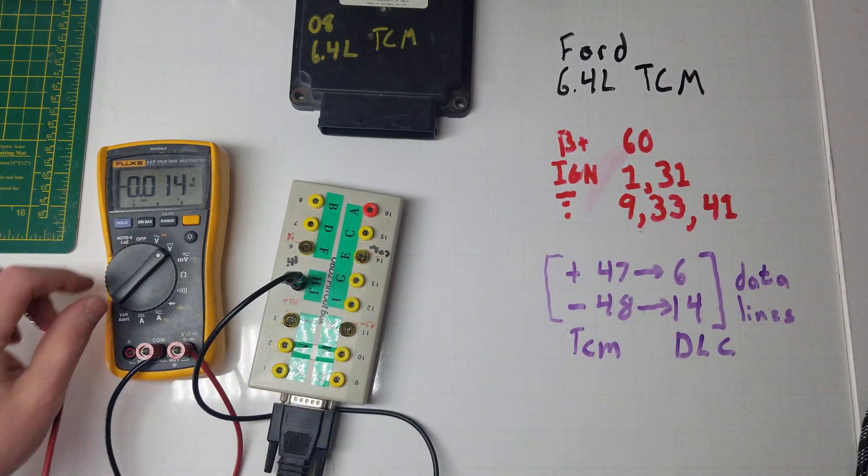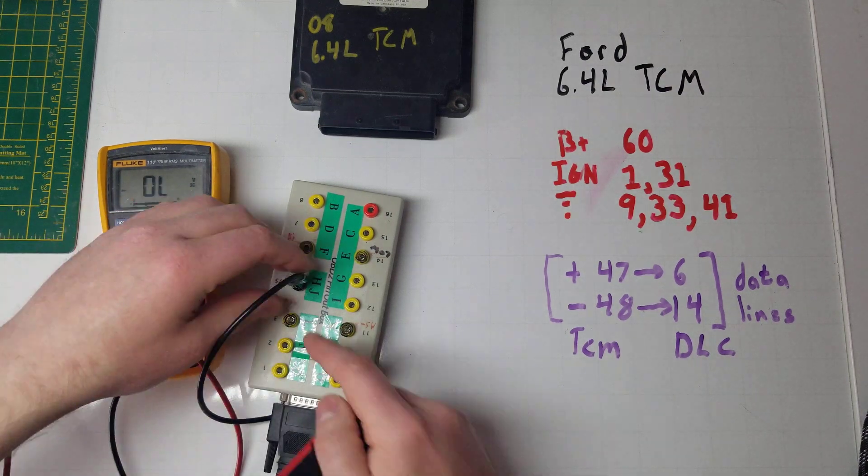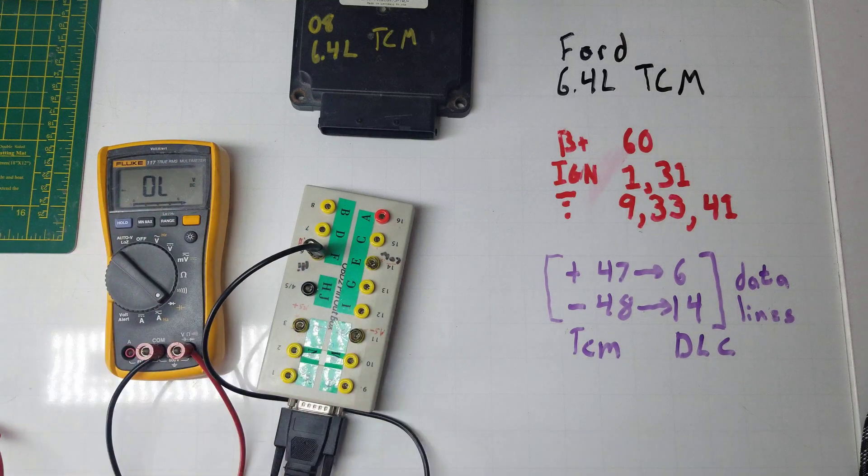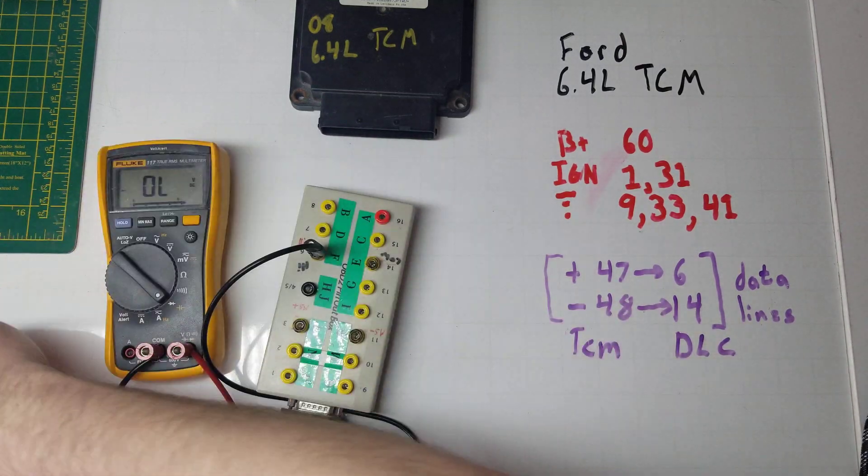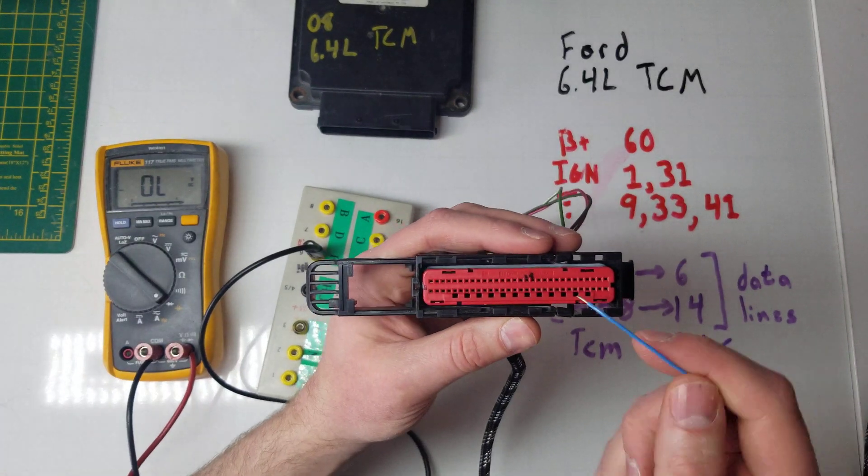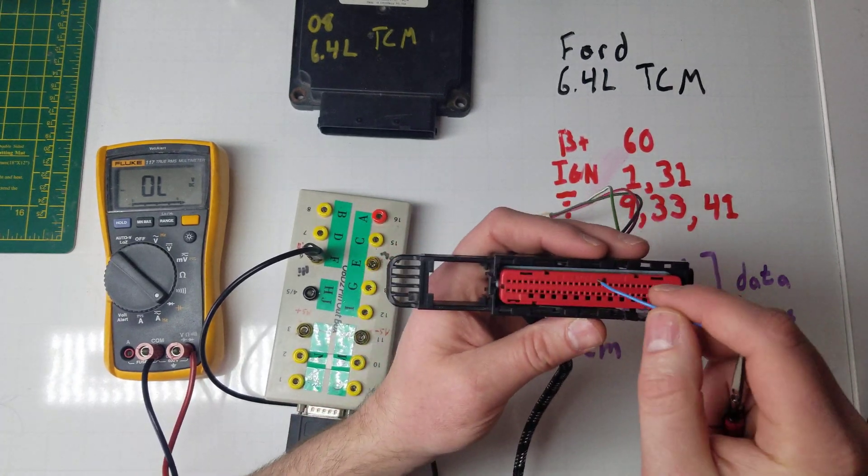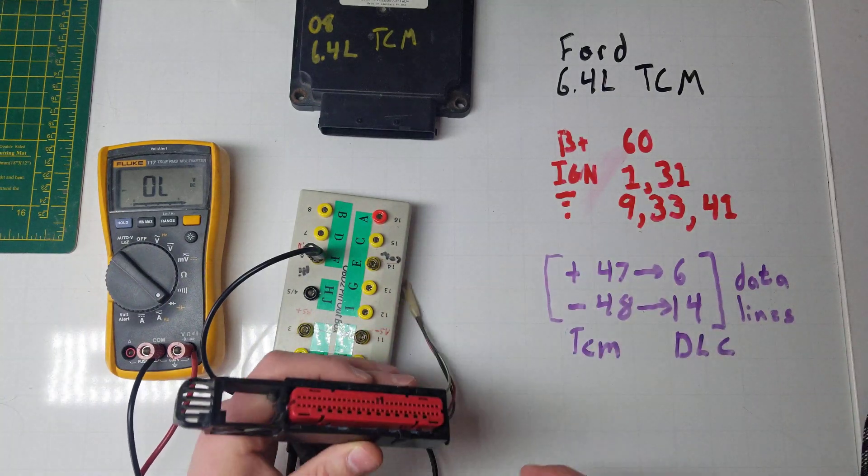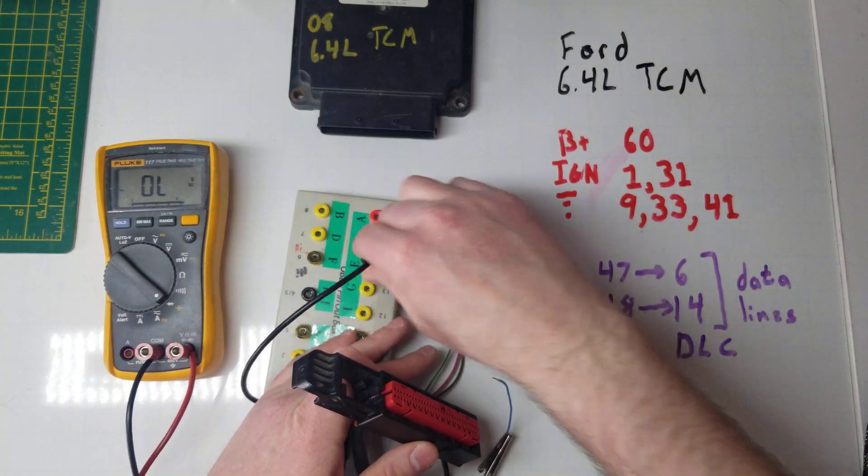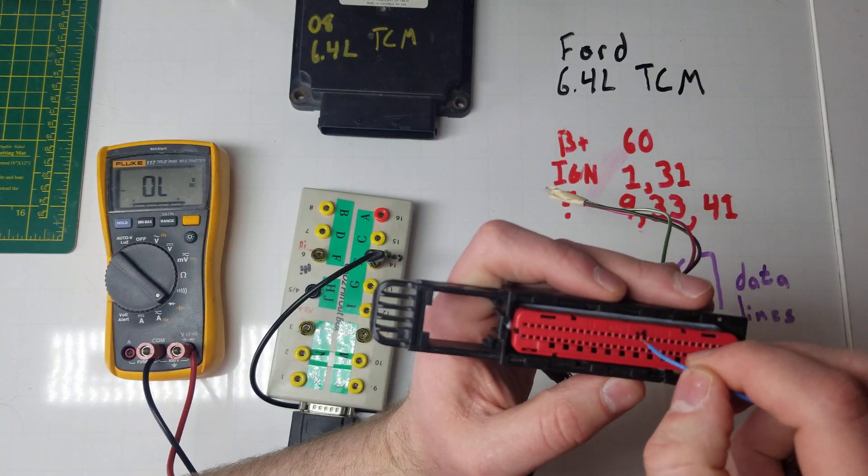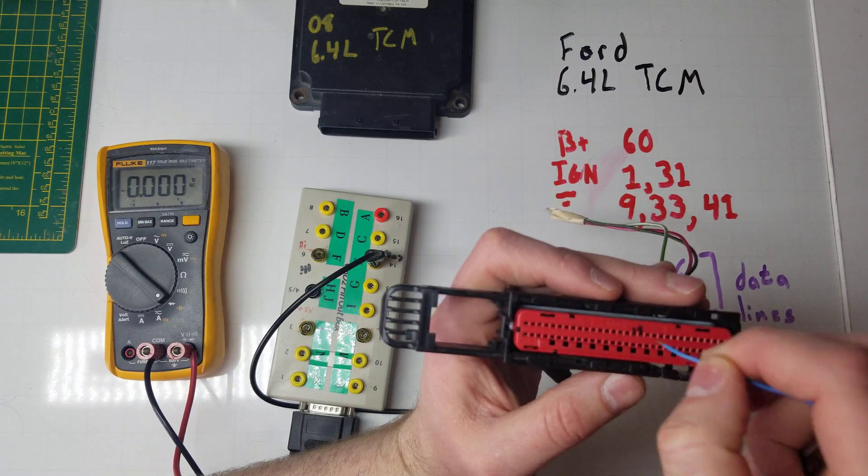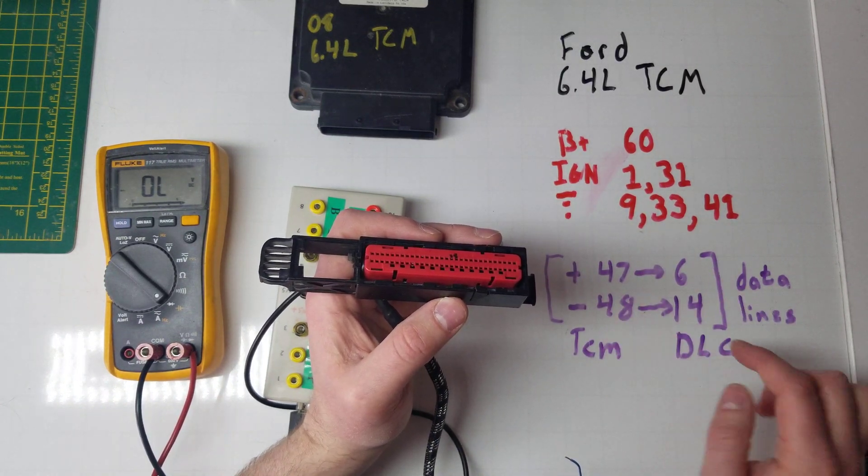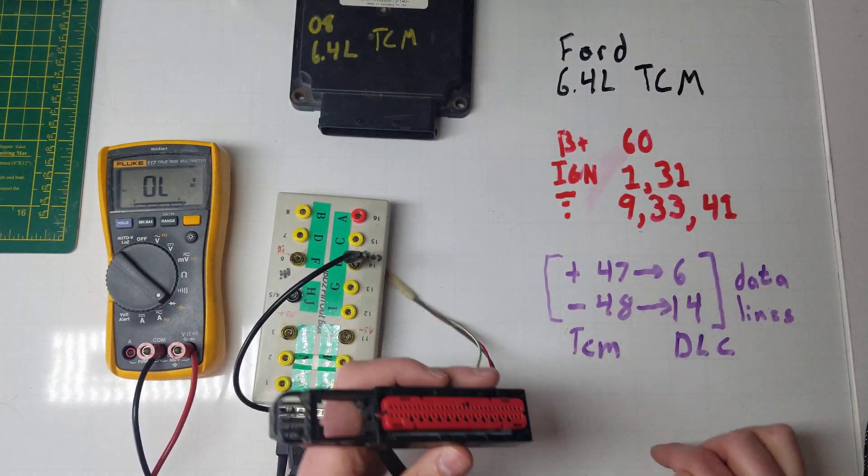So pin 6 to 47, I kind of cheated already with the magic marker, that one's good. Let's go 14, continuity on that one as well. So all you got to check continuity on the CAN bus.